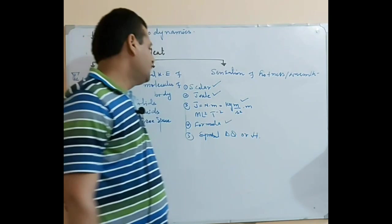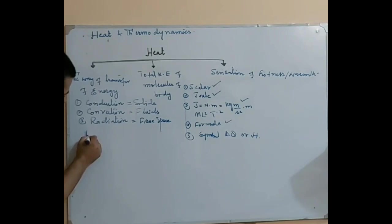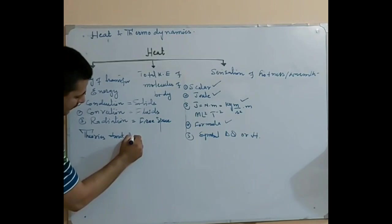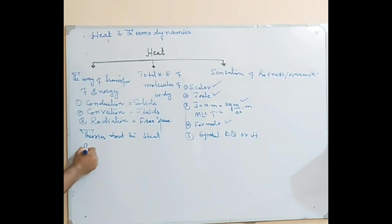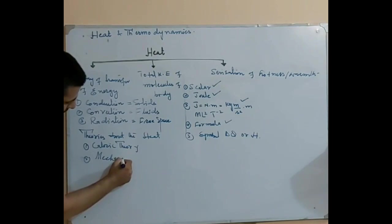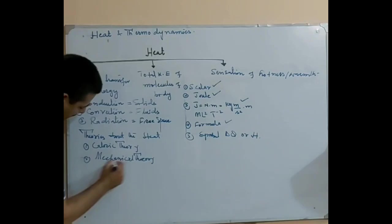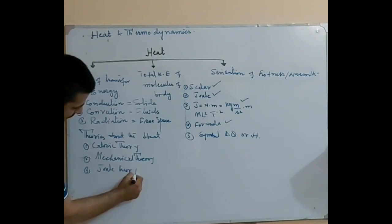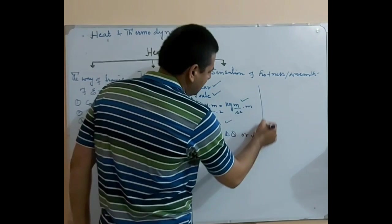There are three famous theories about heat. The first is the caloric theory. The second is the mechanical theory. The third involves Joule's contributions. Regarding units of heat: in the SI system, the unit is joules.